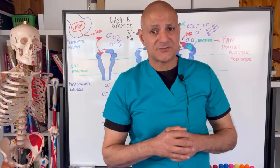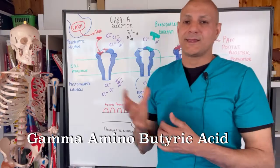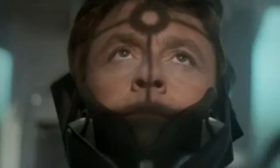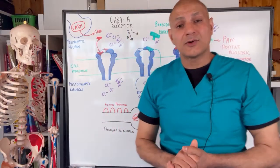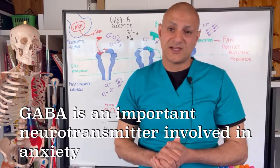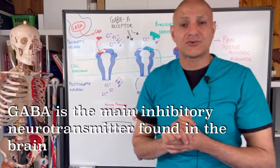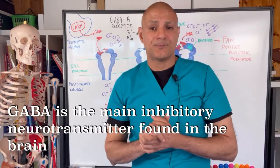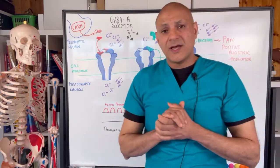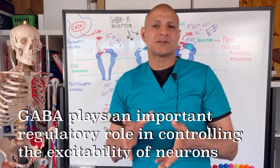GABA stands for gamma-aminobutyric acid. GABA is an important neurotransmitter involved with anxiety, and it is the main inhibitory neurotransmitter found in the brain. It plays an important regulatory role in controlling the excitability of neurons found in certain parts of the brain.